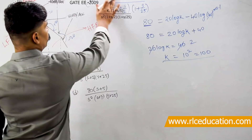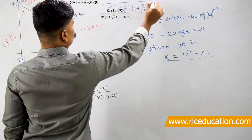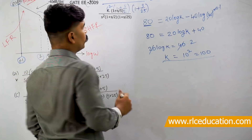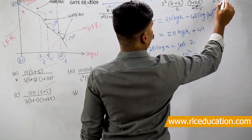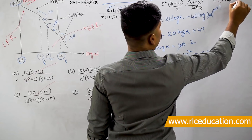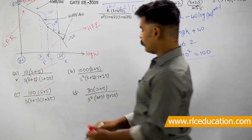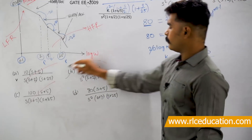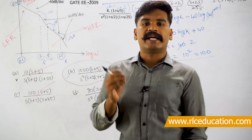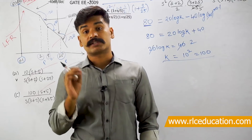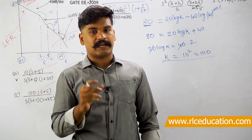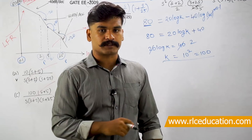Putting K = 100 and converting from time-constant form to pole-zero form, the transfer function becomes 1000(s + 5) / [s²(s + 2)(s + 25)]. Comparing with the given options, option B matches. So option B is the correct answer for this question. I hope you liked this video — my intention is to teach a below-average or beginner student who is not much aware about Bode plots but knows that Bode plots are very important. Thank you for watching.